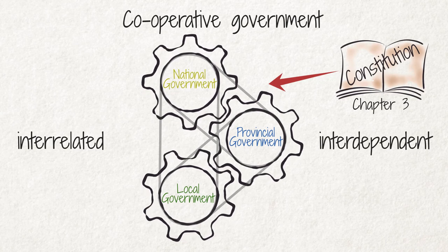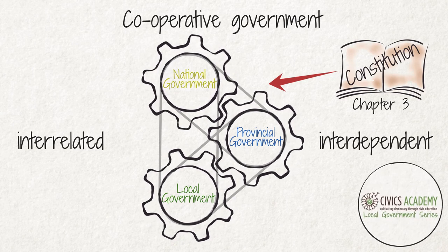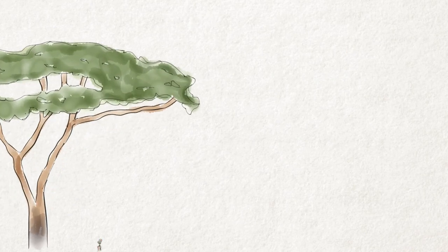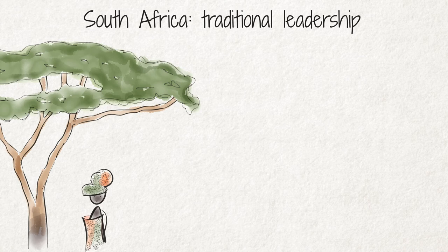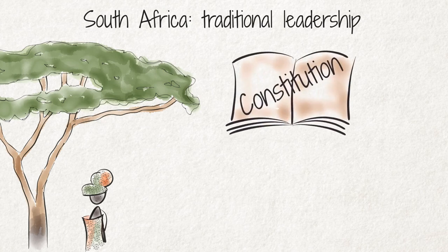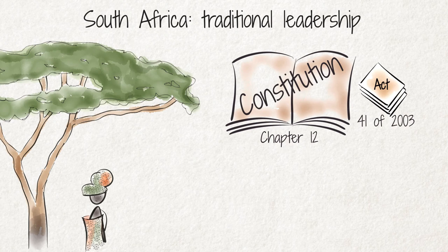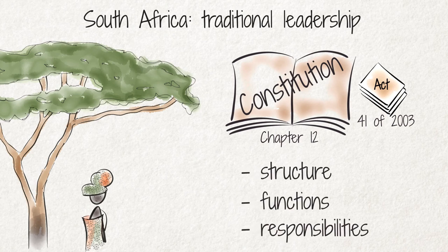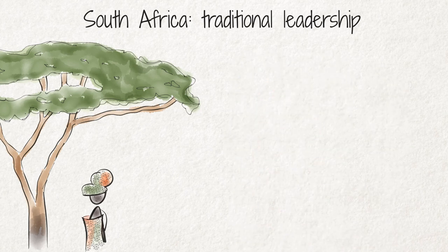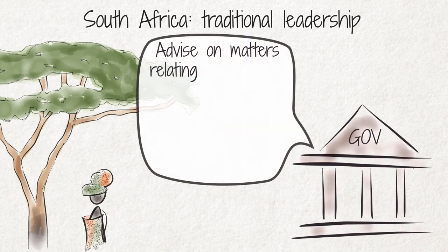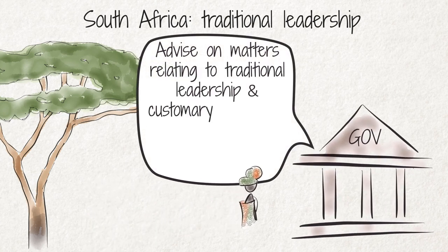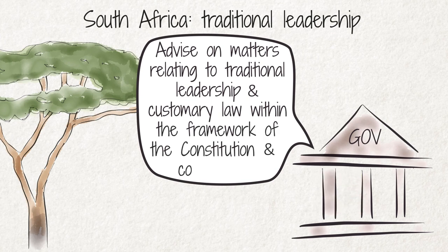We explain the functions of local government in more detail in the Civics Academy Local Government series. While not usually part of government structures, in South Africa, traditional leadership is another institution of governance that plays a role in the lives of many people. The South African Constitution officially recognizes in Chapter 12 the institution, status, and role of traditional leadership. Act 41 of 2003 also deals with traditional leaders within the country's governance framework, outlining the structure, functions, and responsibilities of traditional leadership groups and how they work with government. Traditional leaders may carry out an advisory role to government on matters relating to traditional leadership and customary law, under the condition of operating within the framework of the Constitution and common law.